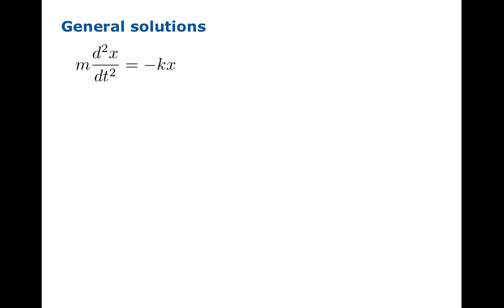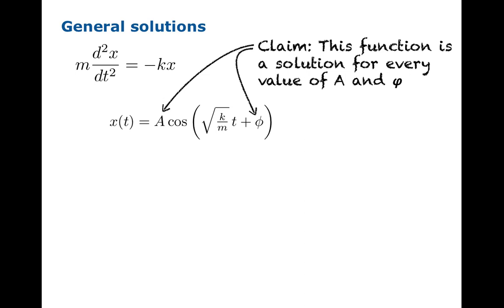In the case of the spring equation, we claim that this rather formidable-looking function is, in fact, a solution. And in this case, A and phi are quantities that we can take to be whatever we want, and it's still going to be a solution.